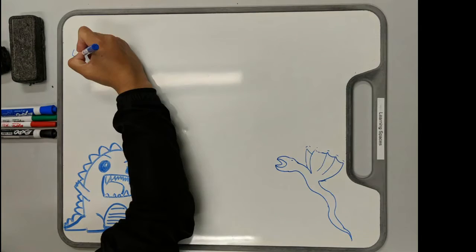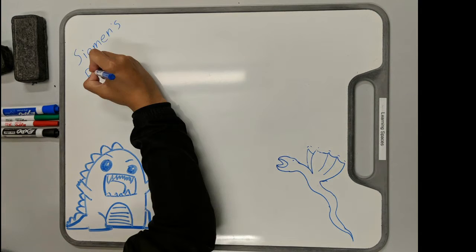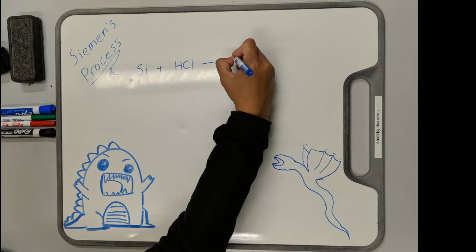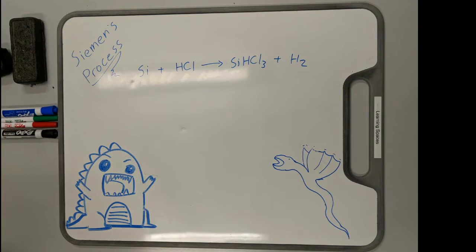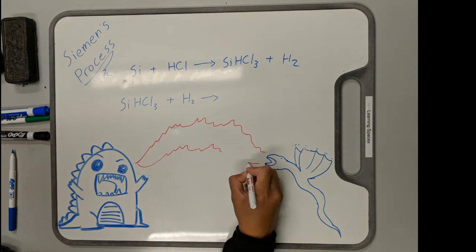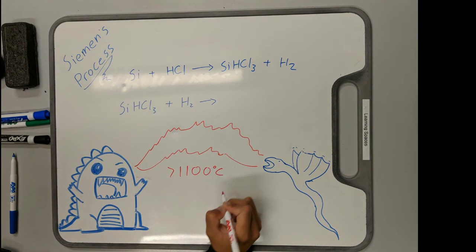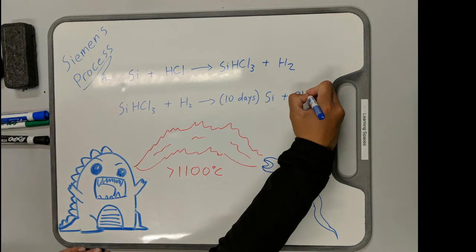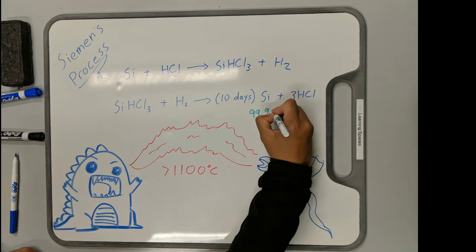The Siemens process involves the addition of silicon with hydrochloric acid to form trichlorosilane and hydrogen gas. Those products are combined together at 1,100 degrees Celsius for 10 total days, and this will form the products of pure silicon and hydrochloric acid. The purity will be around 99.999%.